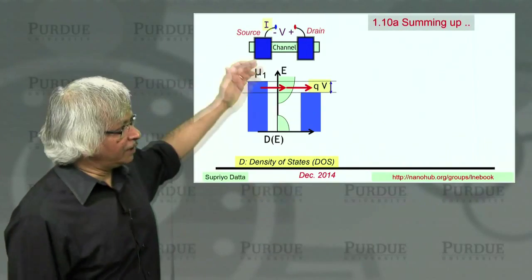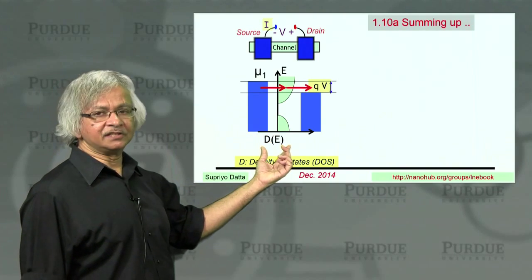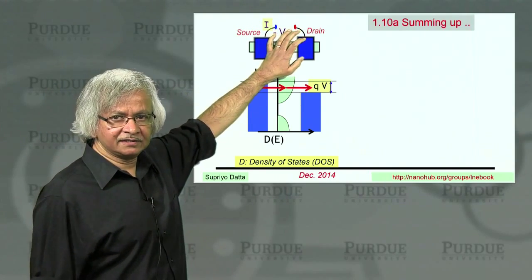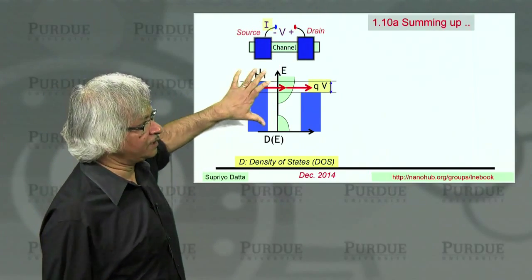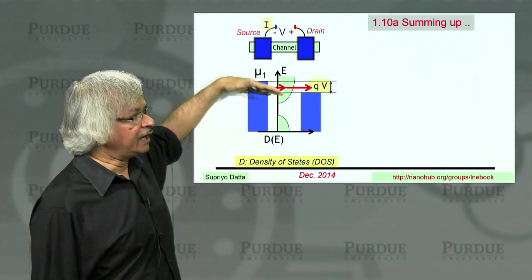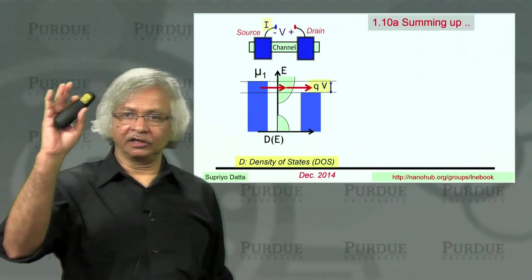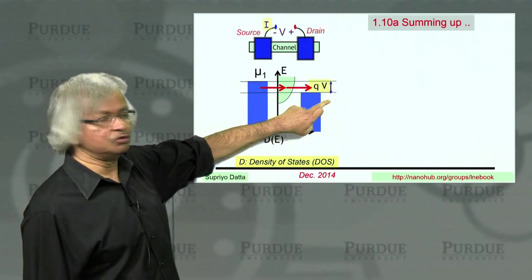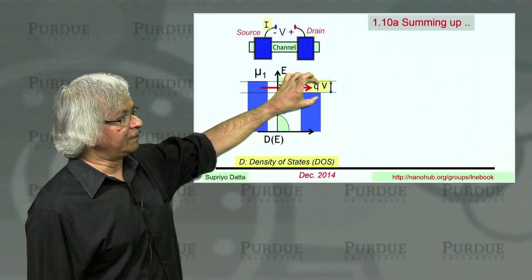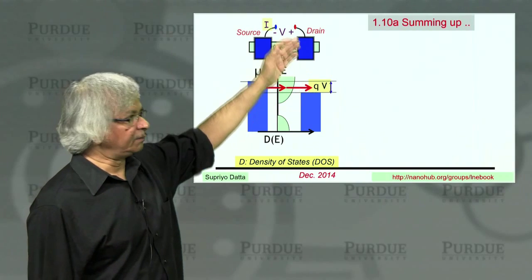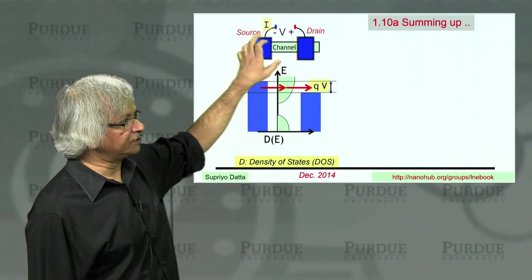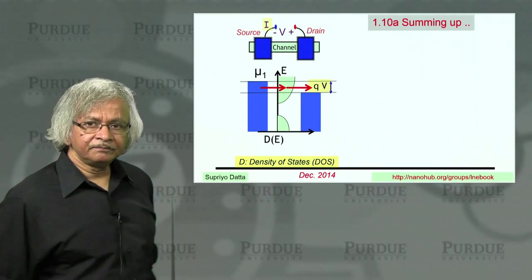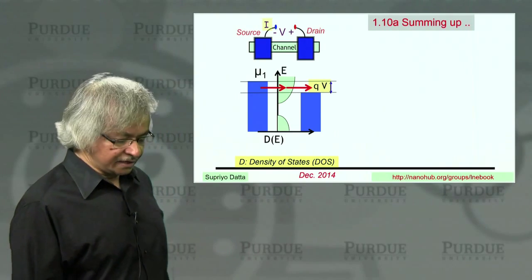We started with defining the concept of a density of states. If you want to describe current flow through any device, the first step is always to draw this density of states diagram and locate the Fermi energy, or electrochemical potential, which we denote mu 1, with mu 2 on the other side. They are separated by the amount of the applied voltage, and the positive side is lowered by Q times V.